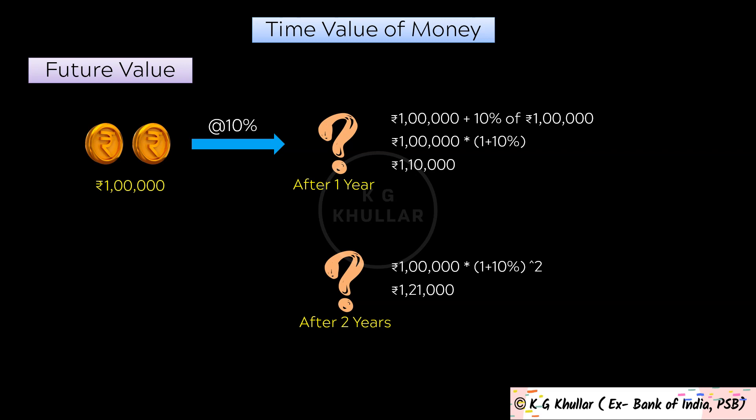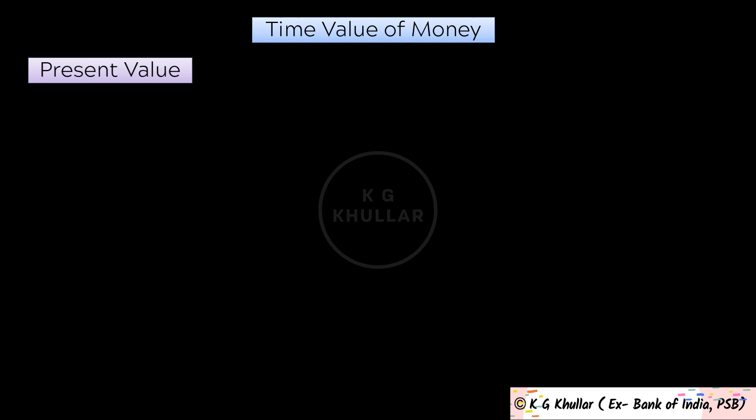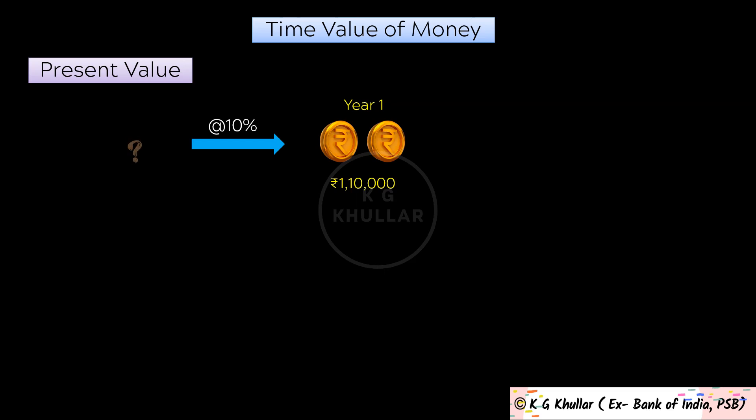Present value is the total opposite of future value. What we are trying to figure out is how much should we invest today in order to get Rs. 1 lakh 10,000 one year from now, assuming a rate of return of 10%. We need to invest Rs. 1 lakh. The formula is simply: divide the amount we are getting after 1 year, that is Rs. 1 lakh 10,000, by 1 plus 10%. So Rs. 1 lakh 10,000 divided by 1.10 equals Rs. 1 lakh.